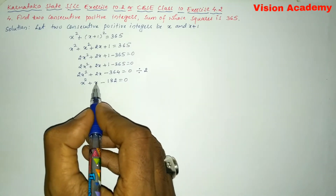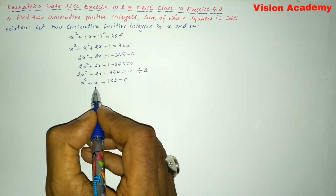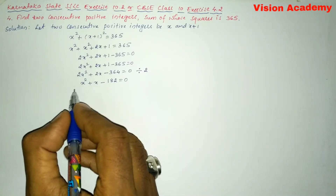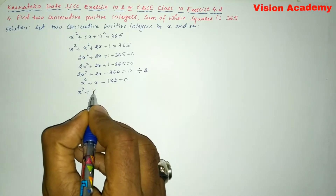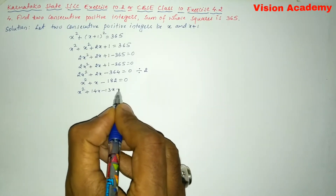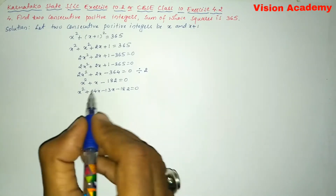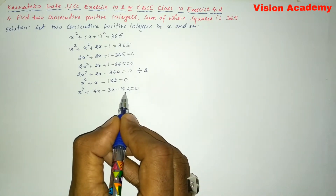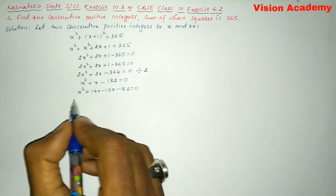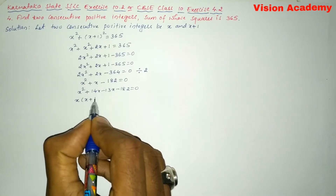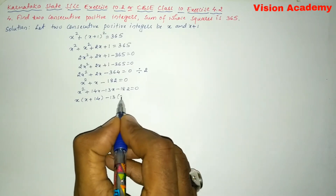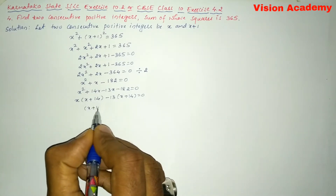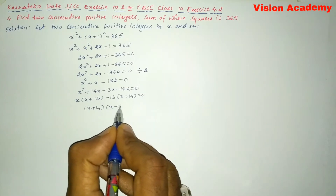Now I have to split the middle term such that the two numbers add to give plus 1 and multiply to give minus 182. So we write x² + 14x - 13x - 182 = 0, since 14x minus 13x is 1x and 14 times -13 is -182. Taking common factors: x(x + 14) - 13(x + 14) = 0, giving (x + 14)(x - 13) = 0.